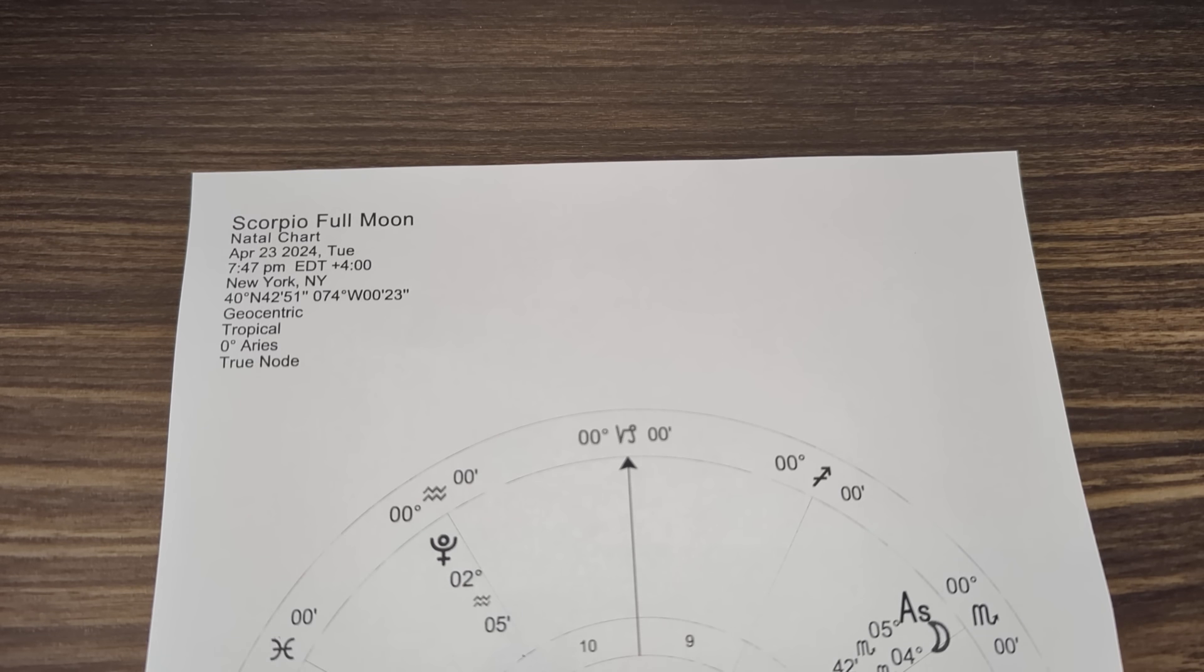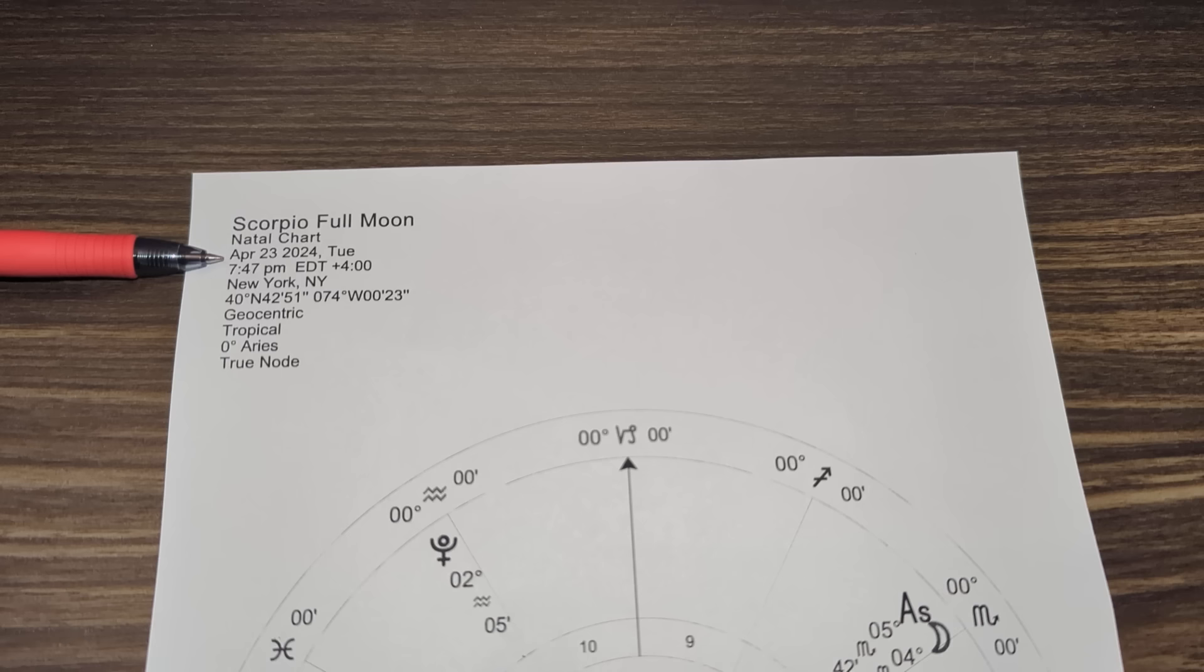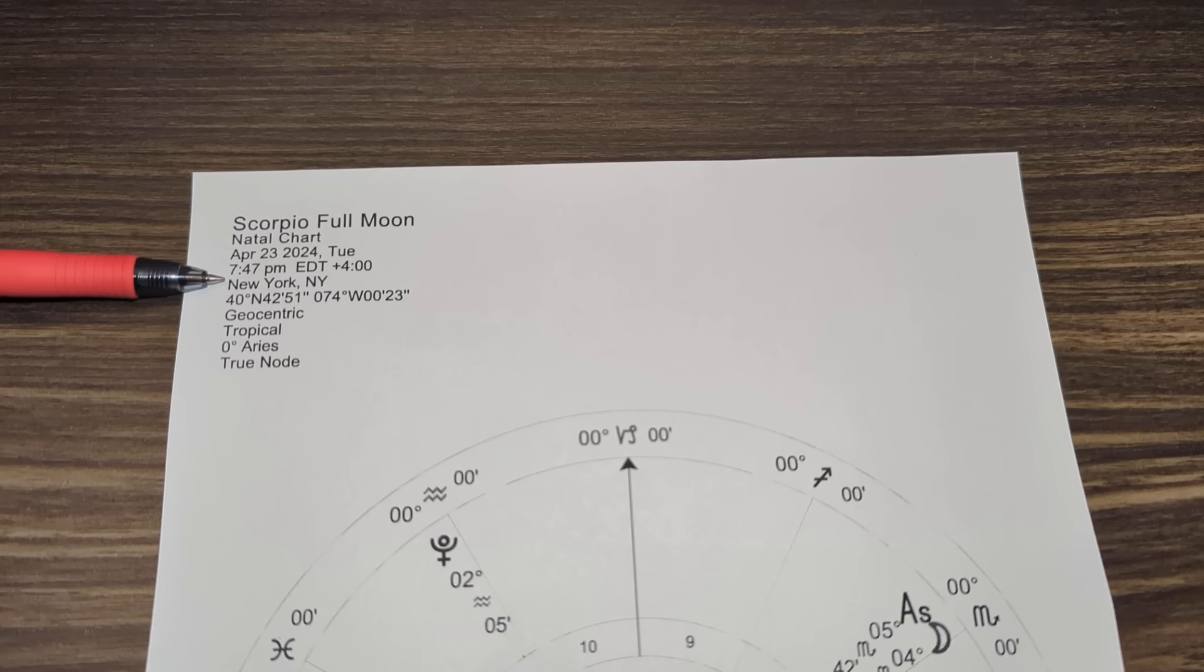Hey, it's Molly. Welcome back to my channel as we're going to discuss the Scorpio full moon happening on April 23rd, 2024 at 7:47 PM Eastern time. Be sure to adjust for your location on the planet.